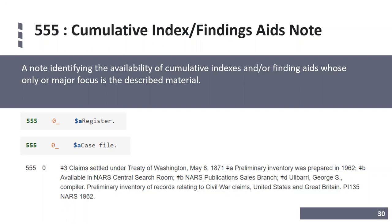Field 555 is the cumulative index or finding aids note, identifying the availability of cumulative indexes and/or finding aids whose only or major focus is the described material. First indicator 0 means no display constant has been generated; leaving the first indicator blank generates the display constant 'Indexes.' Subfield A is the cumulative index or finding aids note, subfield B is availability source, subfield C is degree of control, subfield D is bibliographic references, subfield U is the uniform resource identifier or URI, and subfield 3 is the material specified. In the top example on the slide, the word 'register' refers to a finding aid or contents list.